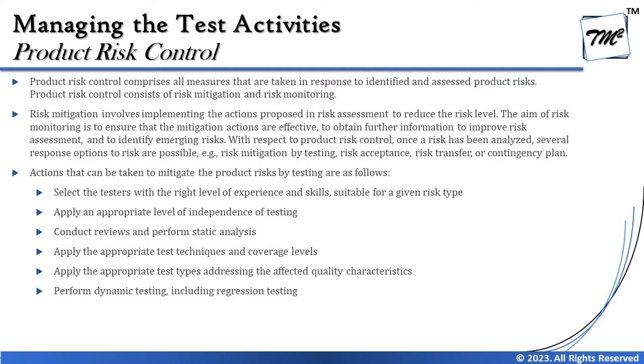So we have four options when a risk is identified: mitigate it, accept it, take a contingency plan to prevent it, or transfer it to the right team. Actions to mitigate product risk by testing include: select testers with the right experience and skills for the given risk type, apply an appropriate level of independent testing, conduct reviews and perform static analysis, apply appropriate test techniques and coverage tools, apply appropriate test types addressing the affected quality characteristic, or perform dynamic testing including regression testing.